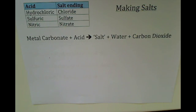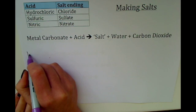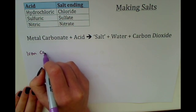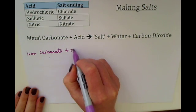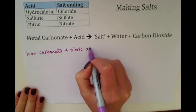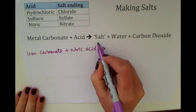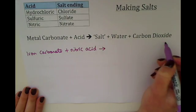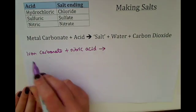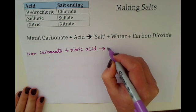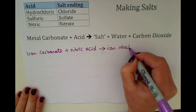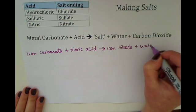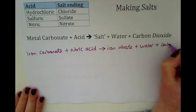Finally, if we look at the metal carbonates, we could use iron carbonate as an example, react that with nitric acid, and we would make a salt plus water plus carbon dioxide. The salt is the only bit that changes, so we would make iron nitrate plus water plus carbon dioxide.